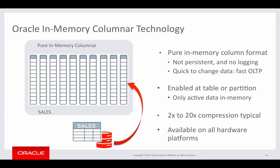The first part of it is the way we store data in this in-memory column store. When data is populated into the column store, two things are going to happen: we're going to read the data in its row format, pivot that data 90 degrees to create columns, and then compress that data. The data is going to be compressed using a brand new set of compression algorithms that we are not using anywhere else in the Oracle Database. These compression algorithms differ from our existing ones in one key area: their main focus is not saving space — it's actually query performance. We want the compression format to be such that we can apply the WHERE clause predicates of your queries directly to that compressed format and only decompress the data that is going to be returned to the end user.